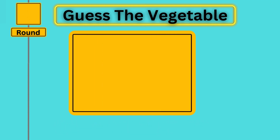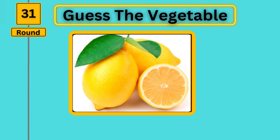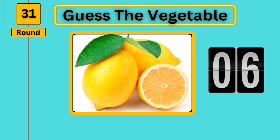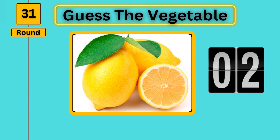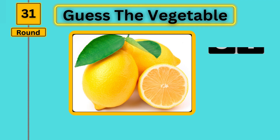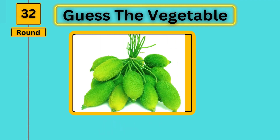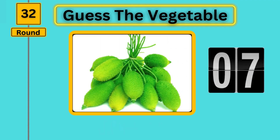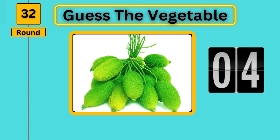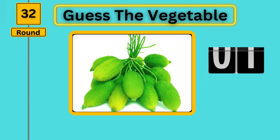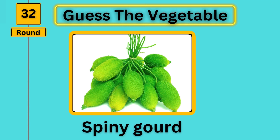Round 31, guess the vegetable. Lemon. Round 32, guess the vegetable. Spiny gourd.